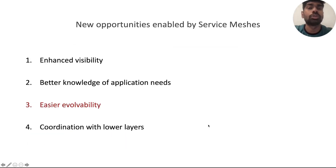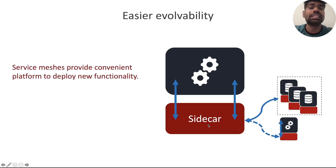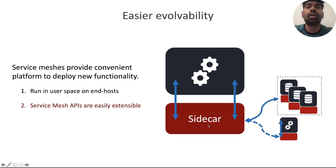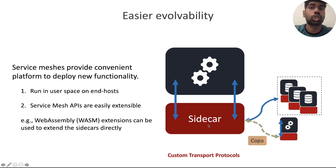The third opportunity we identify is that service meshes offer easier evolvability of network functionality compared to other layers. Adding and modifying functionality in a deployable way is a recurring difficulty. Service meshes provide a convenient platform to easily deploy new functionalities, enabled by two facts: one, they run in user space and therefore can be more easily modified compared to changes to the physical network; two, service mesh APIs are easily extensible with optional parameters and avoid the careful standardization processes at lower layers. For example, as mentioned by the Sneakit paper earlier, WebAssembly extensions can be used directly to extend the sidecars. As another example, the sidecar could be programmed to easily change the congestion control algorithm between the two sidecars from BBR to COPA to PCC, all while the application itself is unmodified and completely unaware.